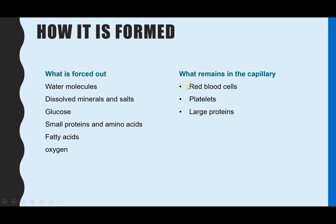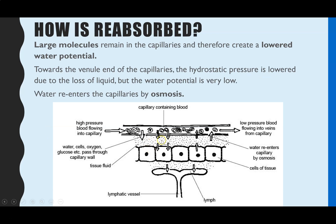This links to how tissue fluid gets reabsorbed. The tissue fluid surrounding the cells has to be reabsorbed — otherwise, if you are constantly forcing liquid out without reabsorbing it, you'd eventually run out of liquid in your blood, and your cells would become covered in so much liquid that you'd see swellings in your body. So water must be reabsorbed back into the capillary. This happens at the venule end — the end of the capillary bed nearest to the veins. Because the large molecules, large proteins, and red blood cells remained in the blood while lots of water was forced out, the liquid remaining inside the capillaries has a very negative water potential compared to the tissue fluid.